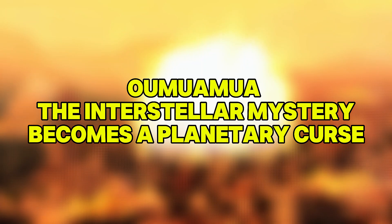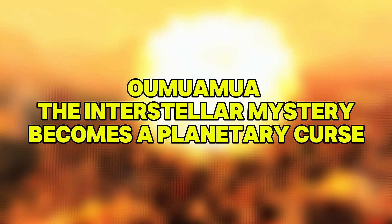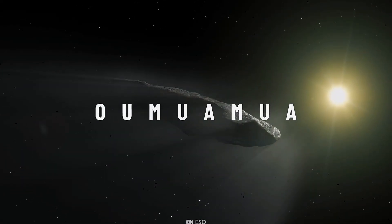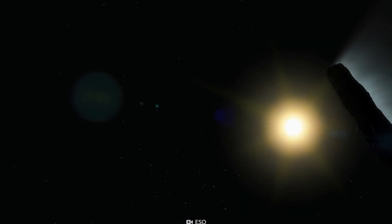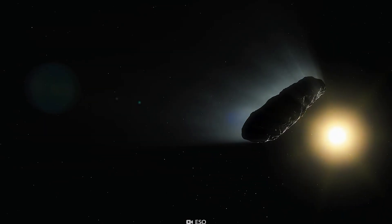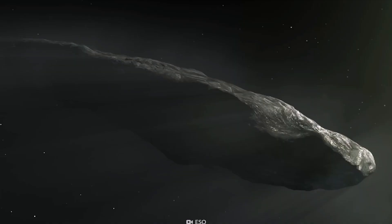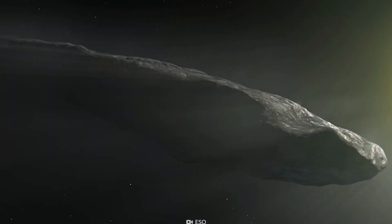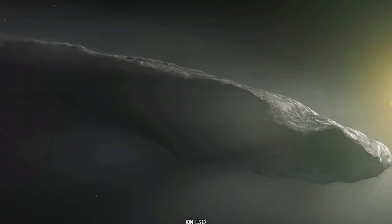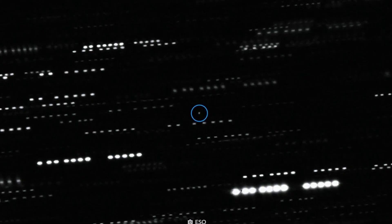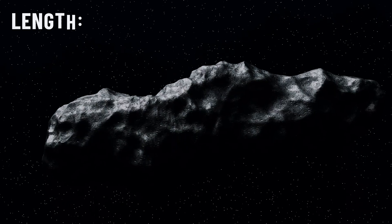Oumuamua, the interstellar mystery becomes a planetary curse. Next, Earth meets a visitor from outside our solar system. Oumuamua, the slender, tumbling, unexplained object that passed Earth in 2017, sparked debates ranging from frozen comet fragment to alien probe. In our scenario, it doesn't drift away into the void. It takes a deadly dive toward Earth's surface. It crashes into the Amazon basin with catastrophic fury.